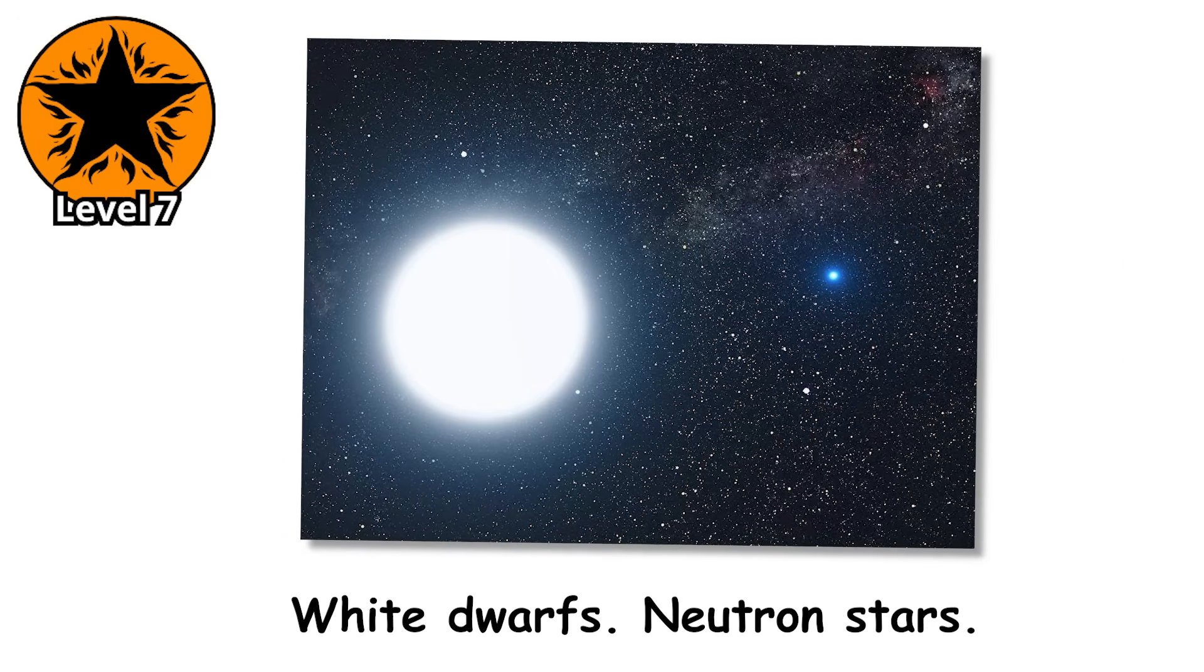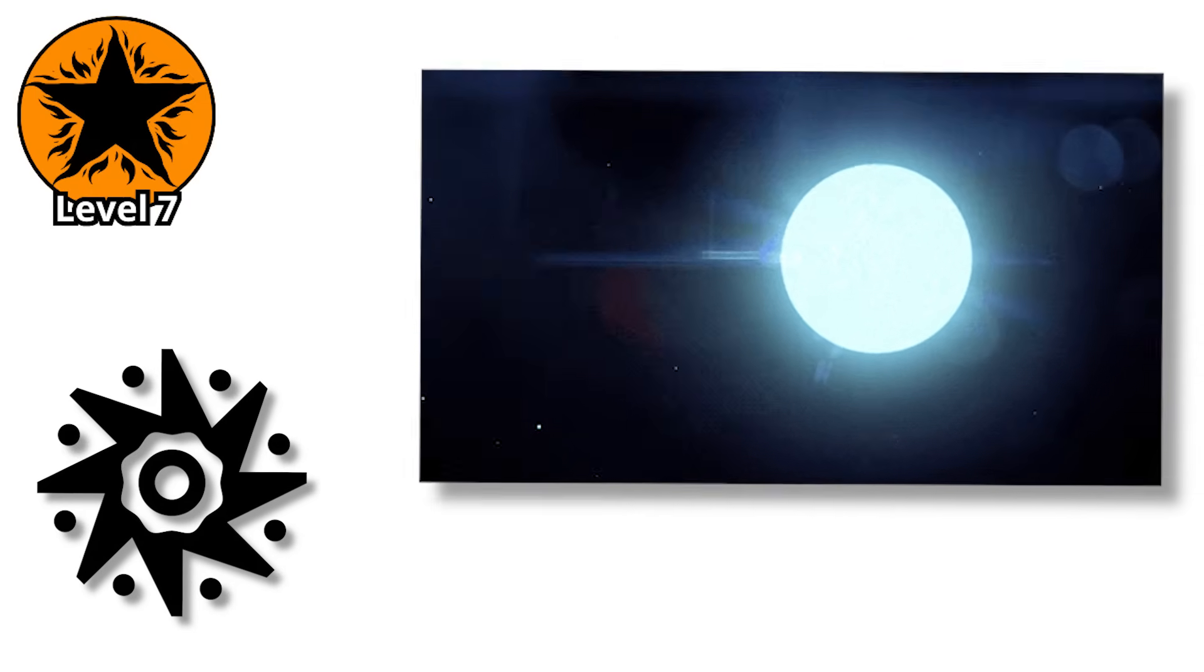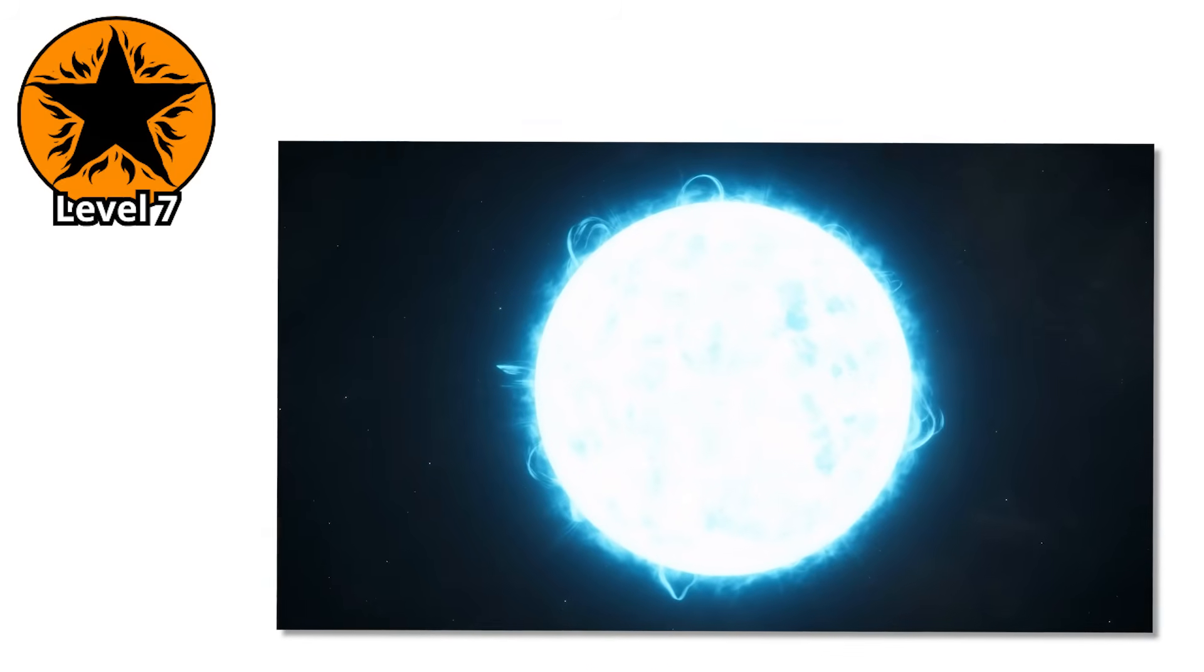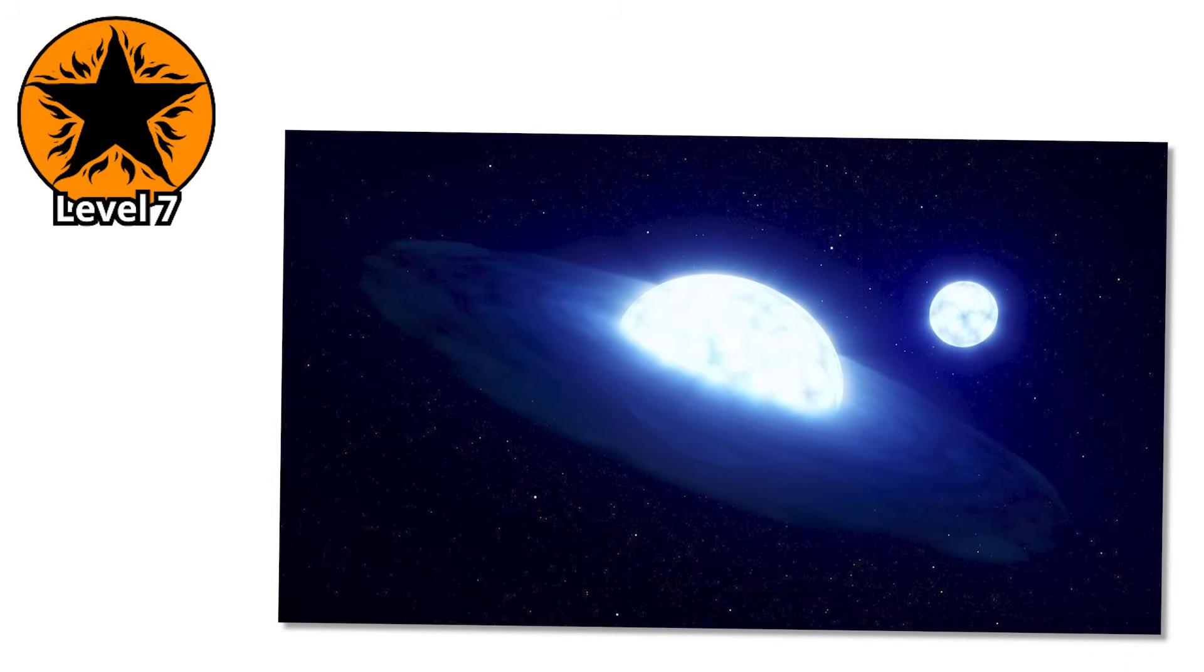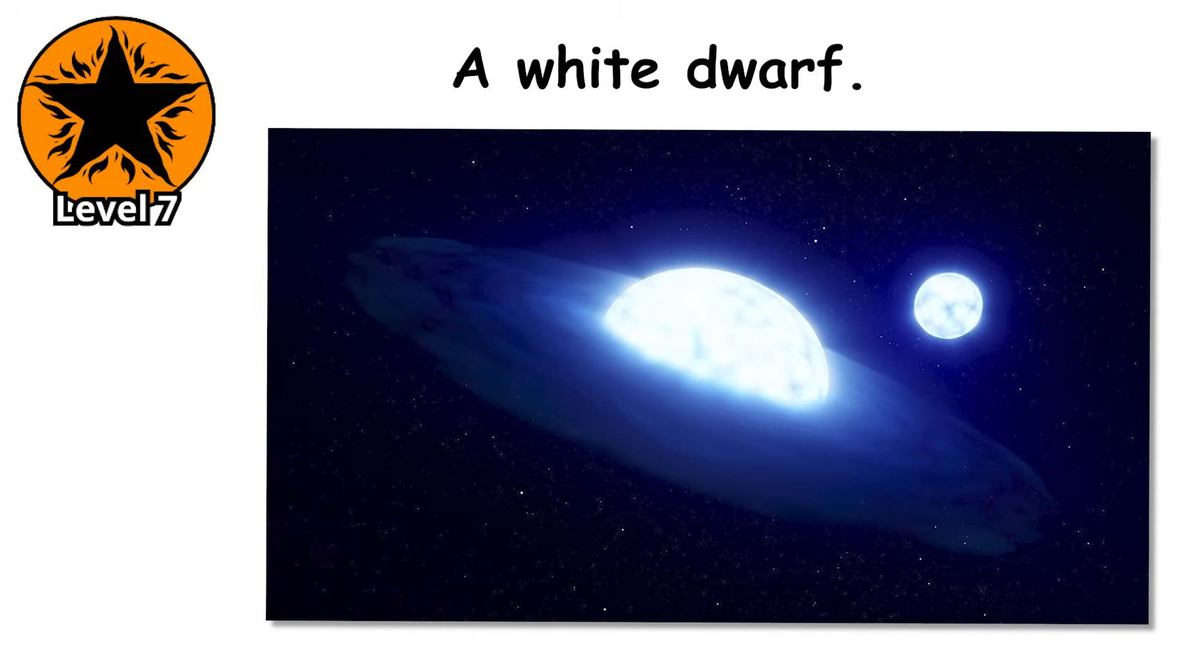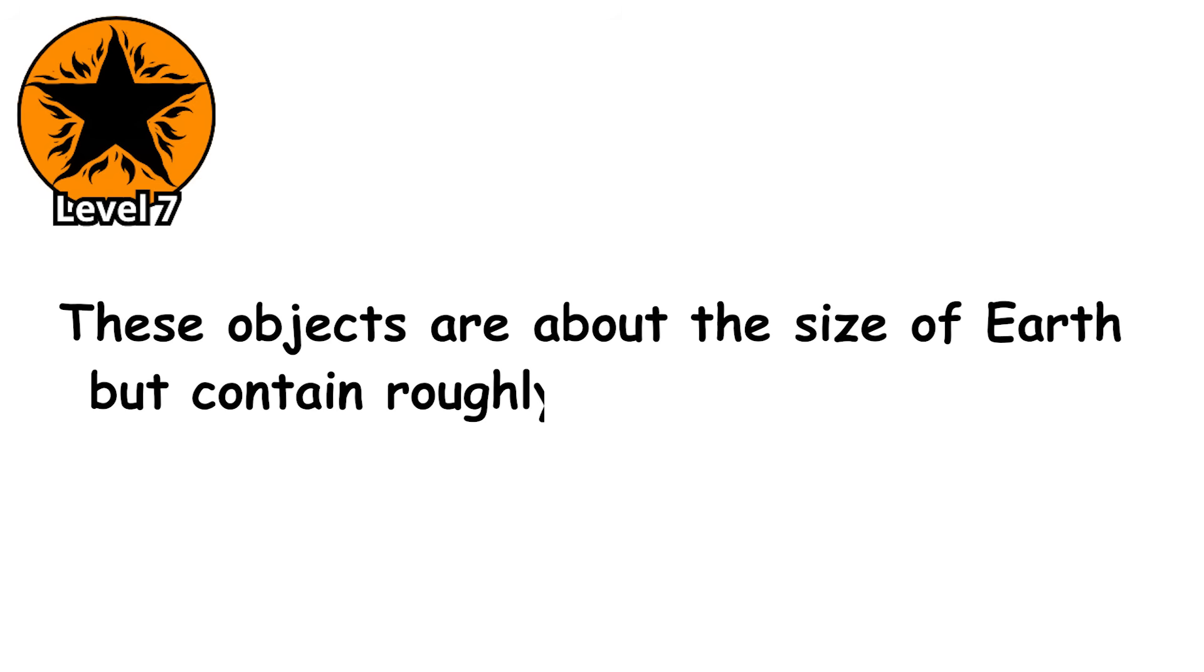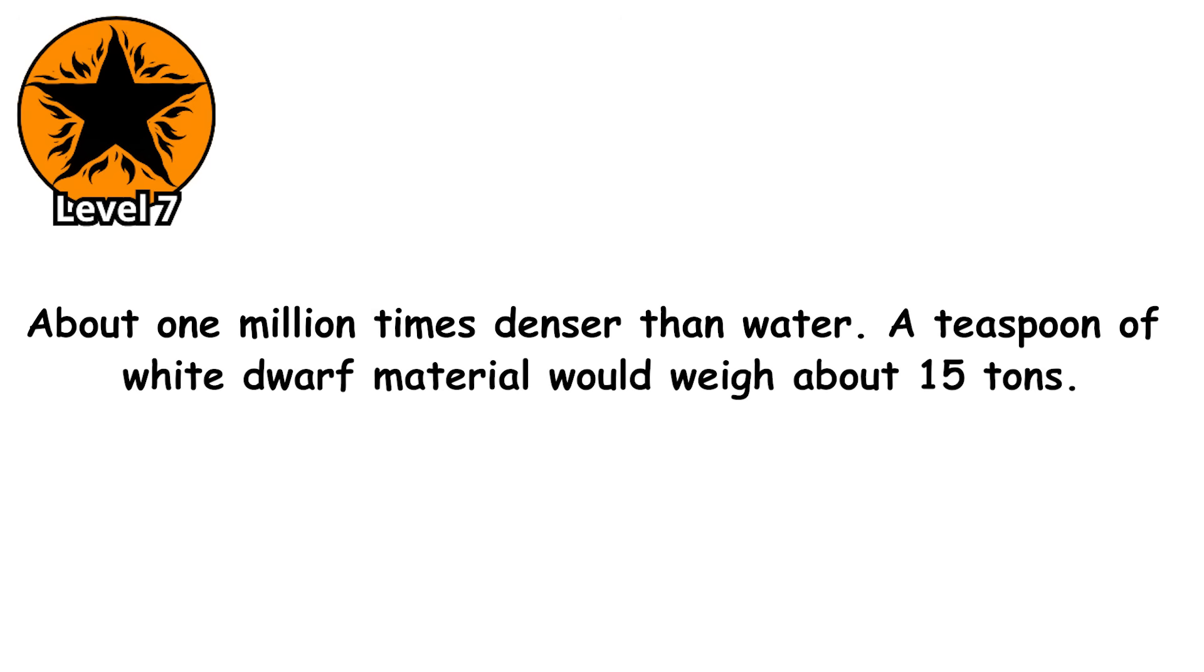White dwarfs. Neutron stars. These aren't stars in the traditional sense. They're what's left after stars die, the corpses of stellar evolution. And they're some of the strangest objects in the universe. When a sun-like star exhausts its fuel, it ejects its outer layers and leaves behind its core. A white dwarf. These objects are about the size of Earth but contain roughly the mass of the sun. That means they're incredibly dense, about one million times denser than water. A teaspoon of white dwarf material would weigh about 15 tons.